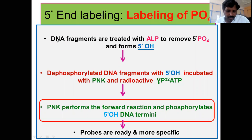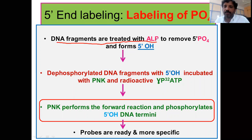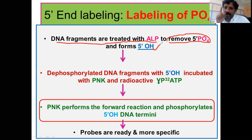Here you see DNA fragments are treated with alkaline phosphatase. The first step is the DNA fragments to be labeled are treated with alkaline phosphatase to remove the phosphate groups from the 5'-prime end, forming a 5'-prime OH. At the fifth carbon there will be an OH group.